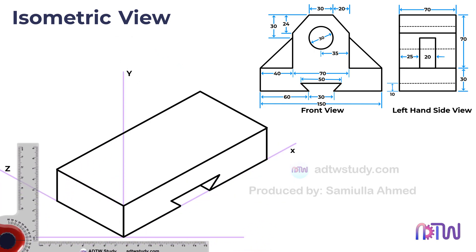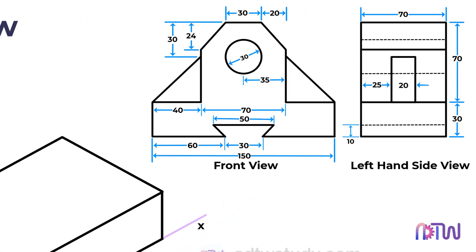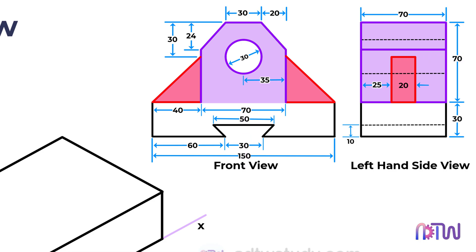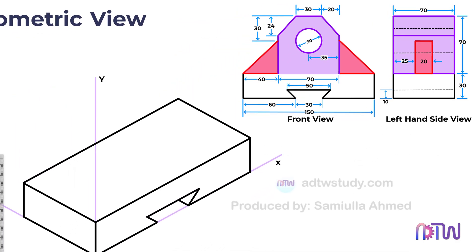This marks the completion of the base. Now let's move on to constructing the top portion, which consists of two parts: the center portion and the two side portions. The center portion has a width and height of 70 millimeters and is positioned exactly in the center of the base. We will begin by constructing the outline for this center portion.